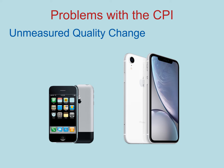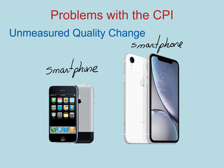Now let's talk about the second problem: unmeasured quality change. When the first iPhone came out, it started the category that we now know as smartphones. Let's suppose that the BLS defined the smartphone category basing it on the iPhone. If that is true, both the original and the new iPhone would qualify as smartphones. So let's think about how what we define as a smartphone has changed in price over time and what that means for our measurement of inflation.